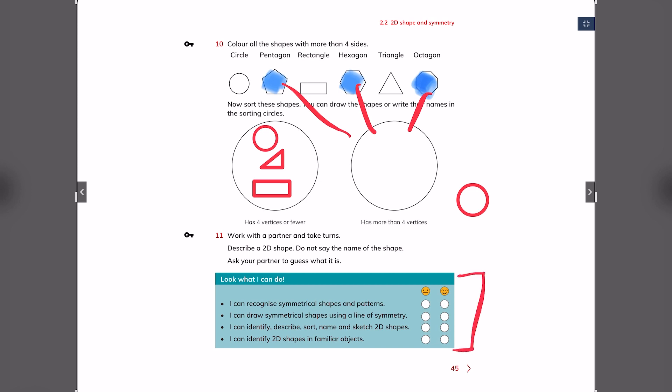Now we have the Look at What I Can Do section. Read this and answer honestly. Can you do this or you cannot do this? After finishing this section, go to section 2.2 on your workbook.